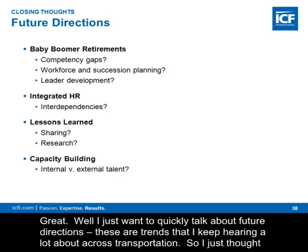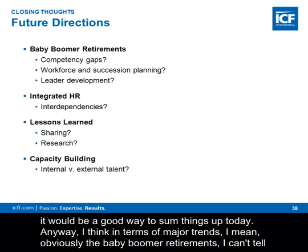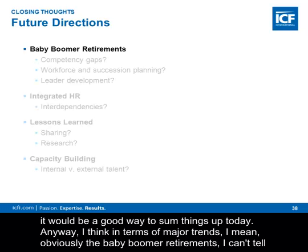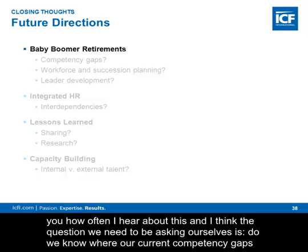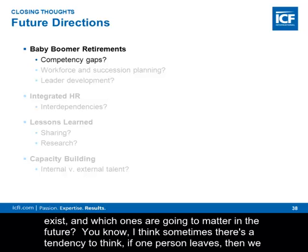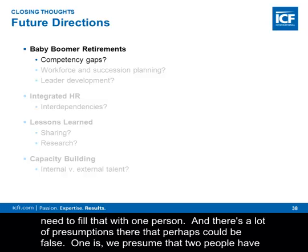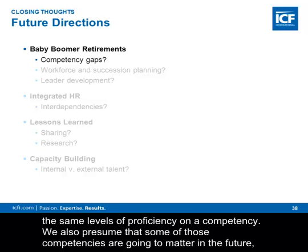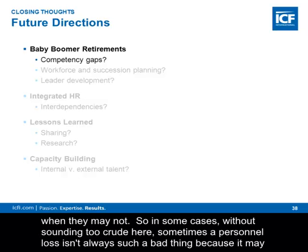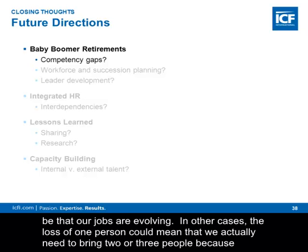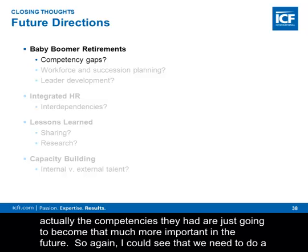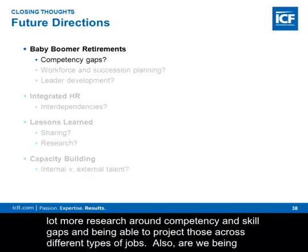I want to quickly talk about future directions — trends I keep hearing about across transportation. In terms of major trends, obviously baby boomer retirements come up constantly. The question we need to ask ourselves is: do we know where our current competency gaps exist and which ones are going to matter in the future? Sometimes there's a tendency to think if one person leaves, we need to fill that with one person. But that presumes two people have the same proficiency levels on a competency, and also presumes those competencies will matter in the future when they may not. In some cases, personnel loss isn't a bad thing because jobs are evolving; in other cases, losing one person may mean we need to bring in two or three because those competencies will become that much more important.